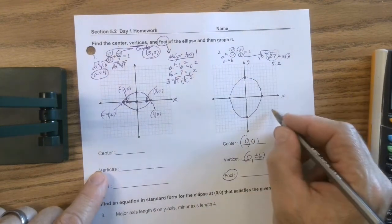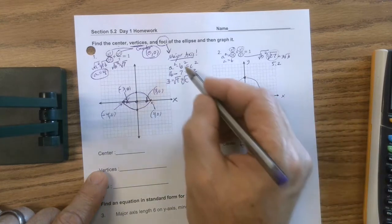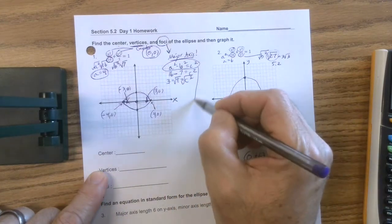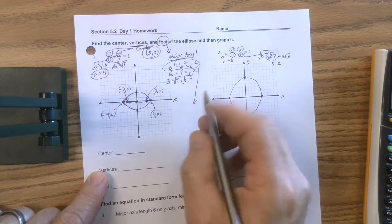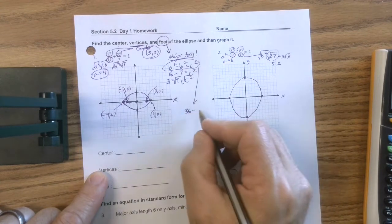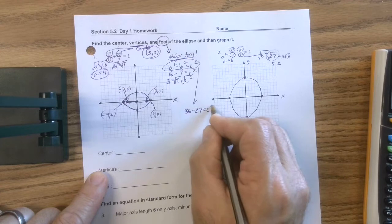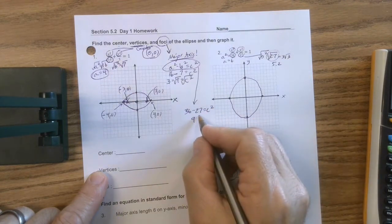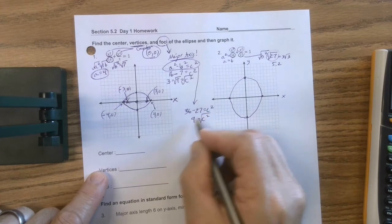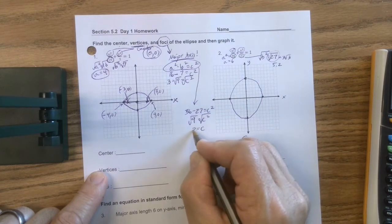Foci. We've got to use our formula. It's right here. So we'll just use it here. So a squared means the larger of the two denominators, which is 36. Minus b squared, which is 27, equals c squared. So once again we get 9 equals c squared. So we take the square root, we get c is 3.